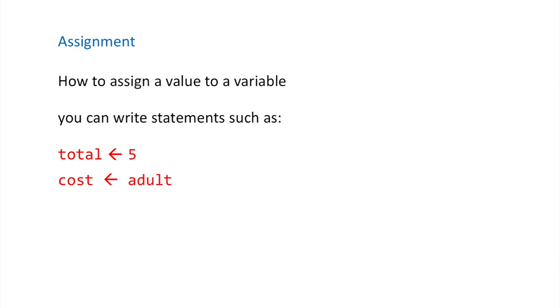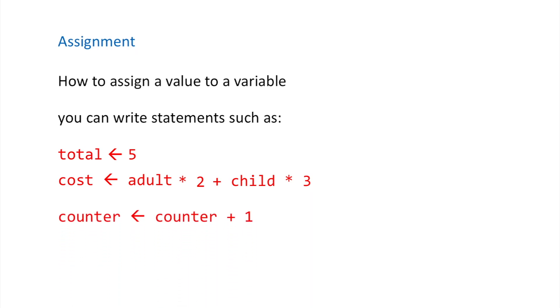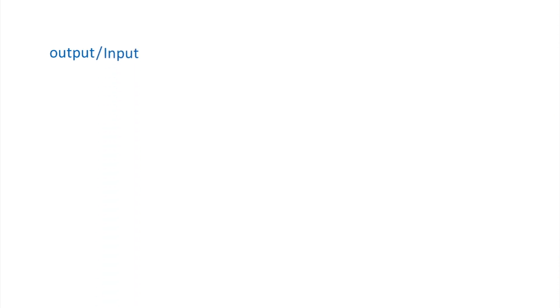You can also assign other variables into a variable. For example, adult can be assigned to cost — whatever value is inside adult goes into cost. You can also do arithmetic: multiply variables, add other variables, or multiply again. For a counter, you can write counter assigned to counter plus one, which increments it by one.